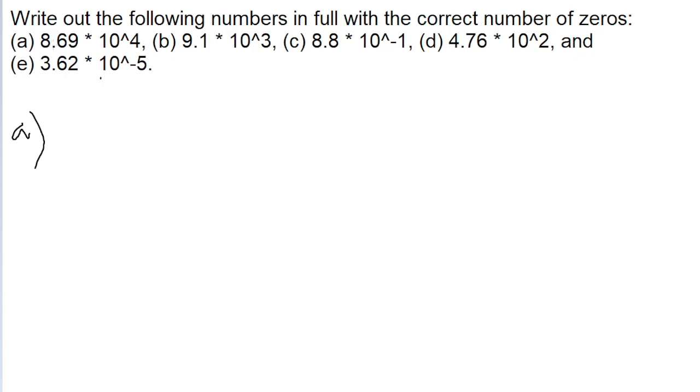So for example, in part A we got 8.69 times 10 to the power of positive 4, so this means we look at where the decimal point is and then move it four spaces to the right. So 1, 2, 3, 4, and then we fill in these gaps with zeros.